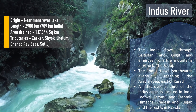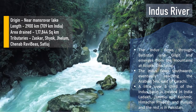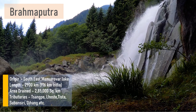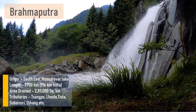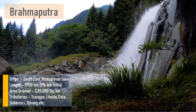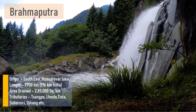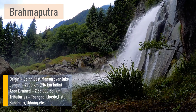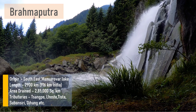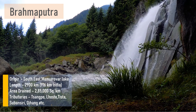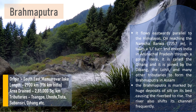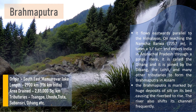Next is the Brahmaputra river. It originates from the south-east of Mansarovar Lake; its total length is 2,900 km, but in India its length is 916 km; area drained is 2,85,000 sq km. Its tributaries are Tsangpo, Lohit, Tista, Subansiri, and Dihang. There is also extra information on screen which you should go through.